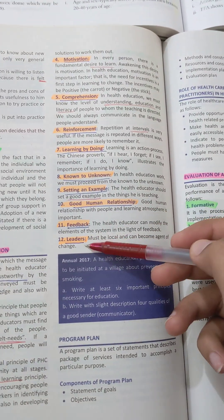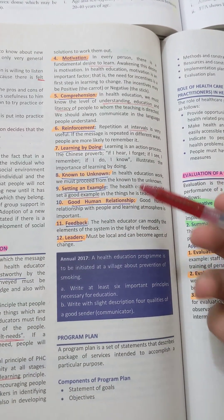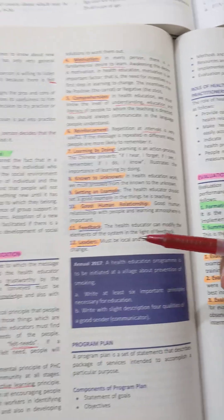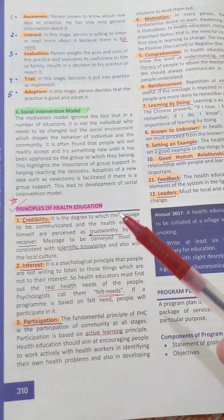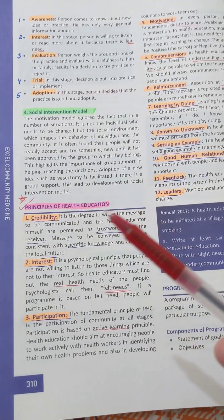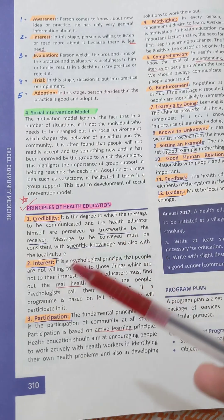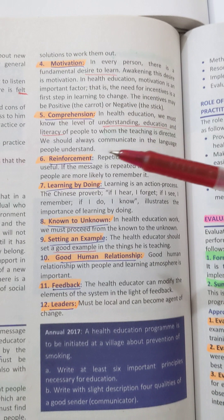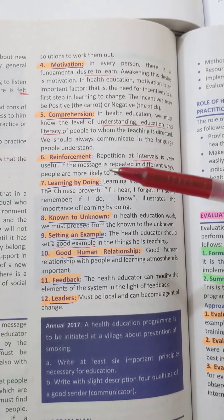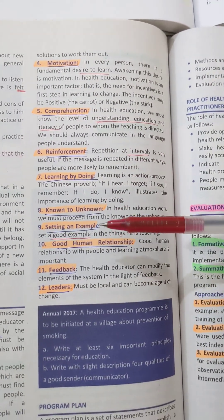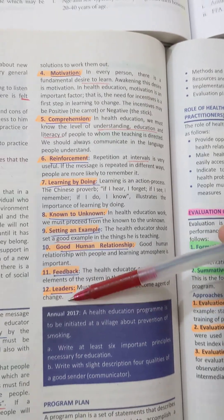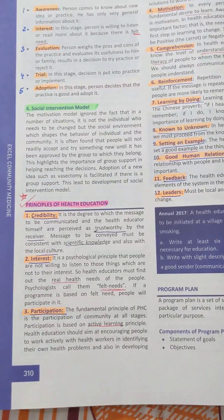And twelfth is leaders. Leaders who are educating must be local, and they can become agents of change. So the 12 principles of health education are: credibility, interest, participation, motivation, comprehension, reinforcement, learning by doing, known to unknown, setting an example, good human relationship, feedback, and leaders. I hope that this will be understood.